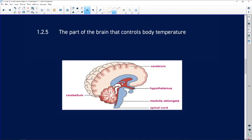The part of the brain that controls body temperature. That is the hypothalamus, which is this part of the brain, just above the pituitary gland.